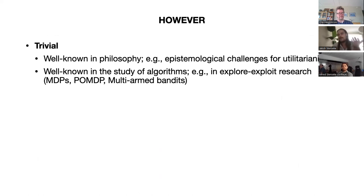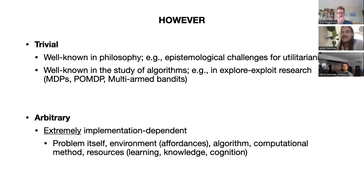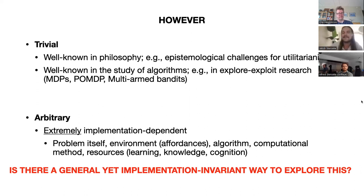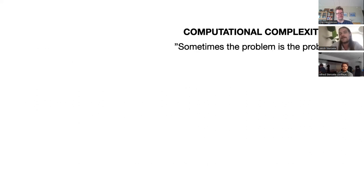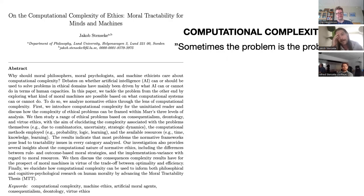This is trivially related to the problem in utilitarianism of whether you think of consequences right now or for all eternity. In algorithmic terms, this is very well known in the explore-exploit research in reinforcement learning on the multi-armed bandit problem. But it's extremely implementation-dependent — it depends on how you frame the problem, the environment, the algorithm, whatever heuristic you use, the computational method, and the resources available. So I was thinking: is there a very general yet implementation-invariant way to explore this? This led me to dig into computational complexity, summarized well by the idea that sometimes the problem is the problem.